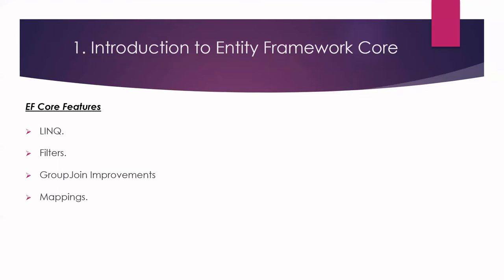Next we have group join improvements. Then we have mapping — Entity Framework Core supports complex type mapping, called owned entities. Next is table splitting, where it is now possible to map two or more entity types to the same table.